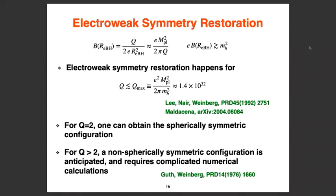For an extremal magnetic black hole, the B-field at the event horizon is inversely proportional to the charge Q — because increasing Q also increases the horizon radius (which goes as Q in Planck units), and the area grows as Q². So higher charge means smaller B-field. For charges less than roughly 10³², the B-field at the horizon exceeds the Higgs mass squared, meaning the electroweak symmetry is restored near the event horizon.